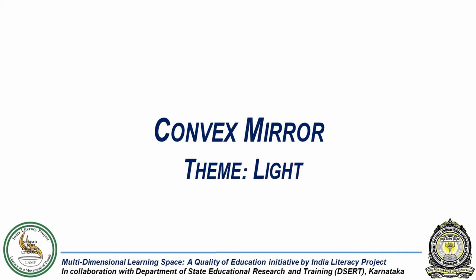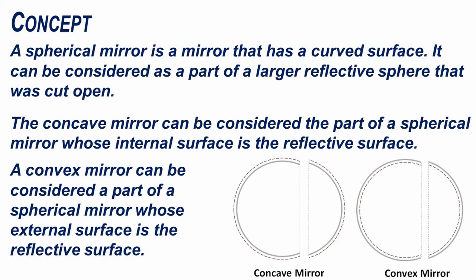In this experiment, we will see how light behaves when it is reflected off a convex mirror. A spherical mirror is a mirror that has a curved surface. It can be considered as a part of a larger reflective sphere that has been cut open. The concave mirror is the part of a spherical mirror whose internal surface is the reflective surface, while a convex mirror is the part whose external surface is the reflective surface.